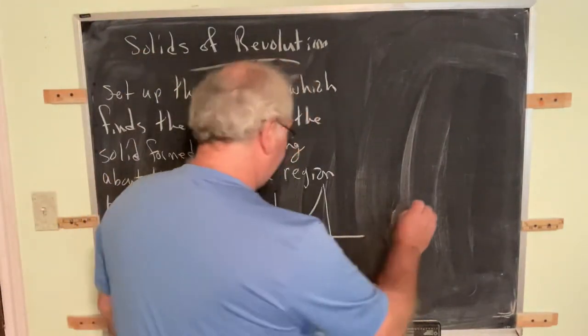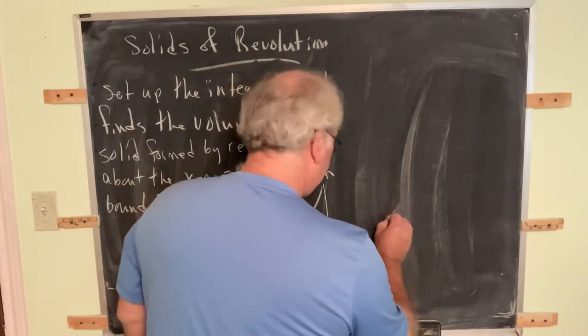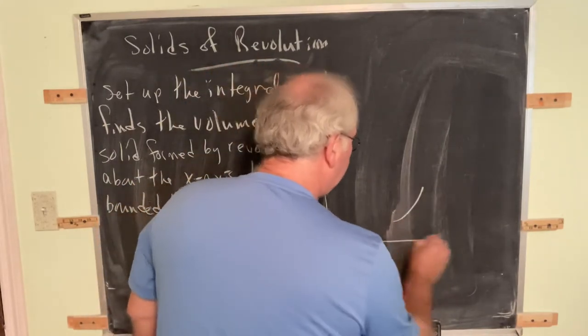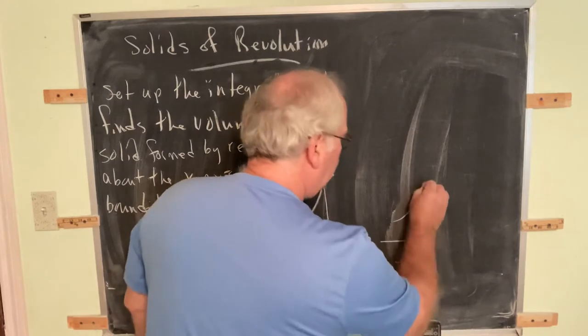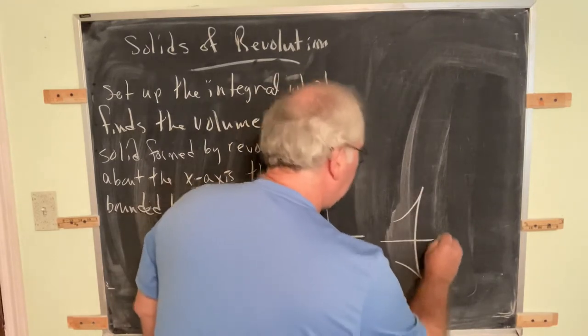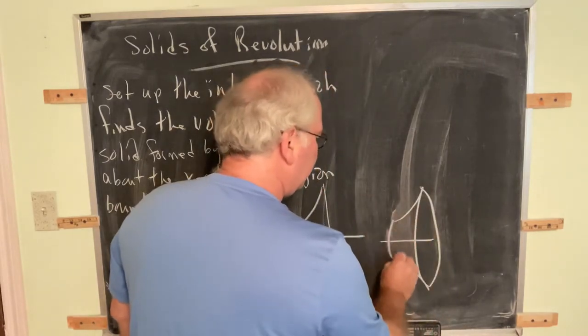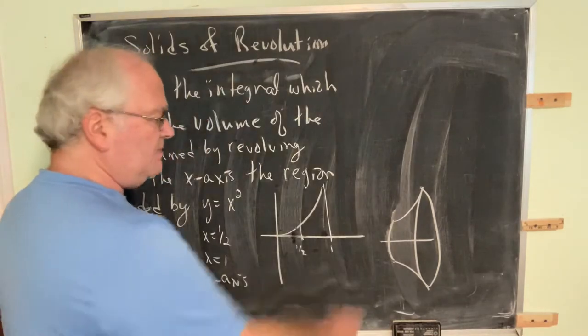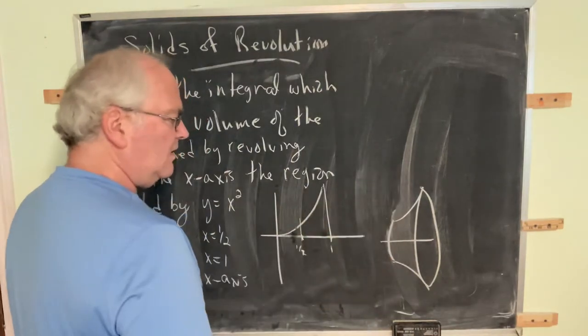And so if you rotate that, the picture would look something like that getting rotated here. You're going to get the bell of a trumpet that's been cut off.